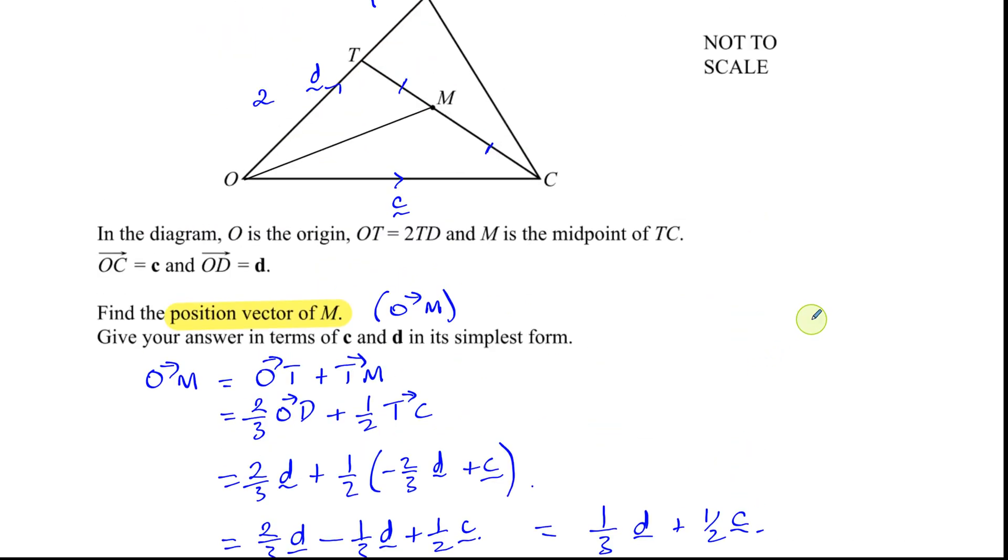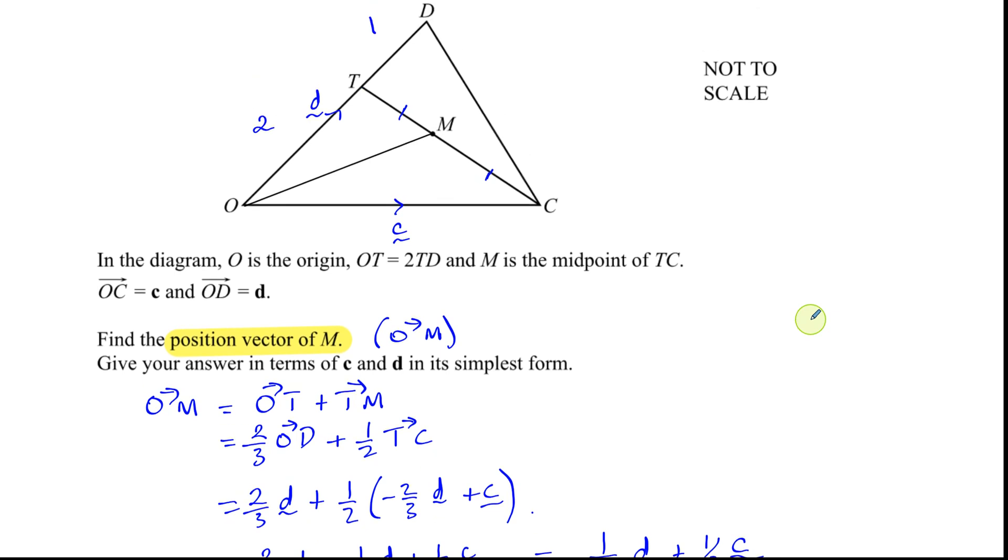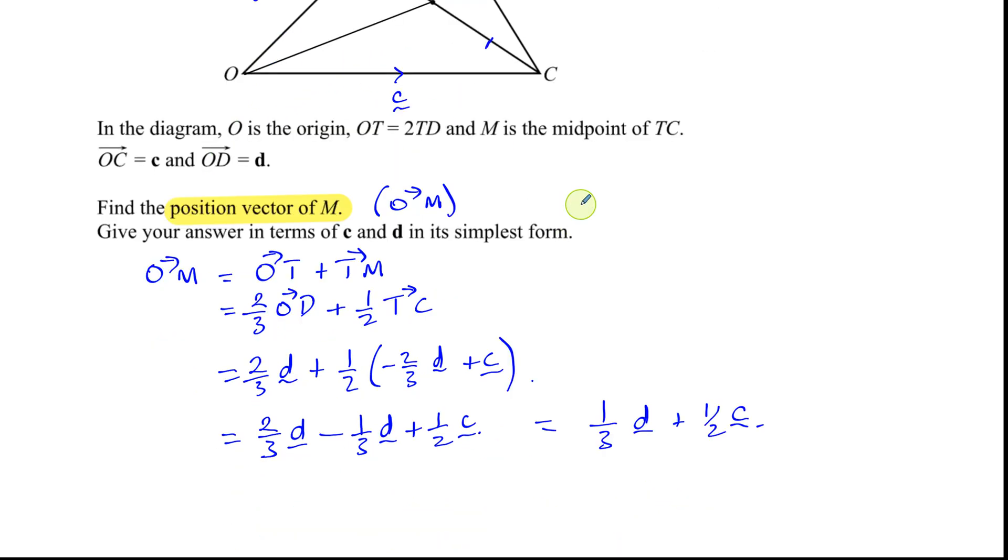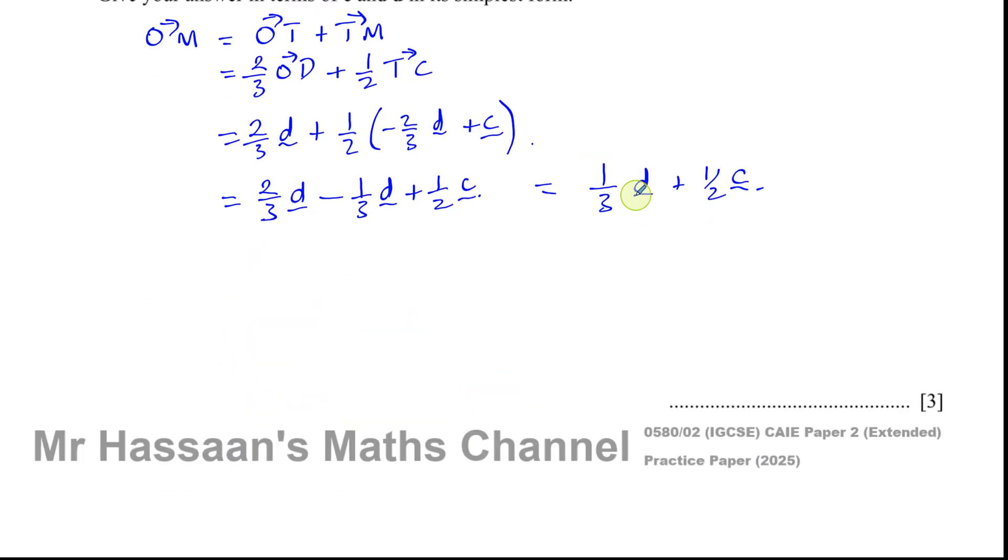And we can kind of think to ourselves, is our answer kind of sensible. So if you want to go from, we're trying to go from O to M. So if you think about it, a third of d plus a half of c kind of makes a bit of sense. So it looks like it takes us from O to M. So there's our vector O to M, a third of d plus a half of c or vice versa.